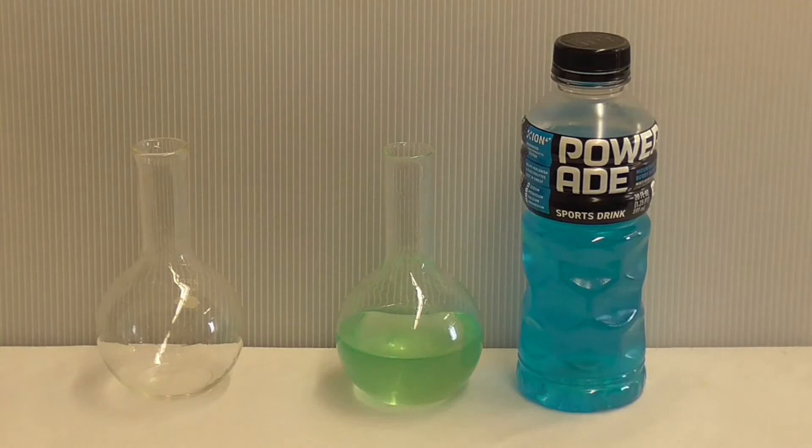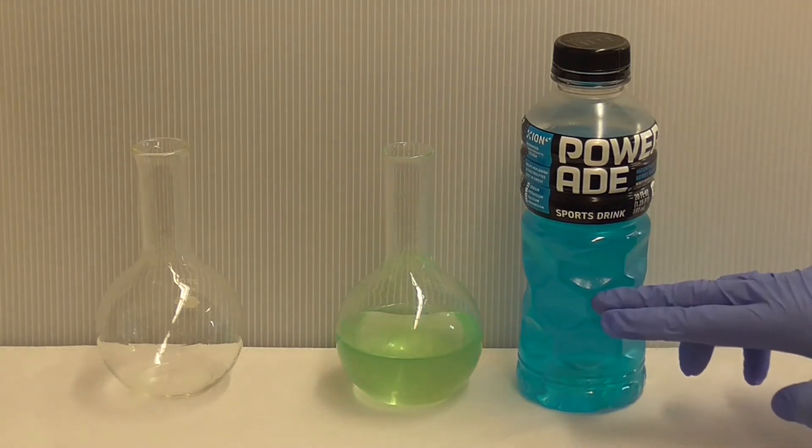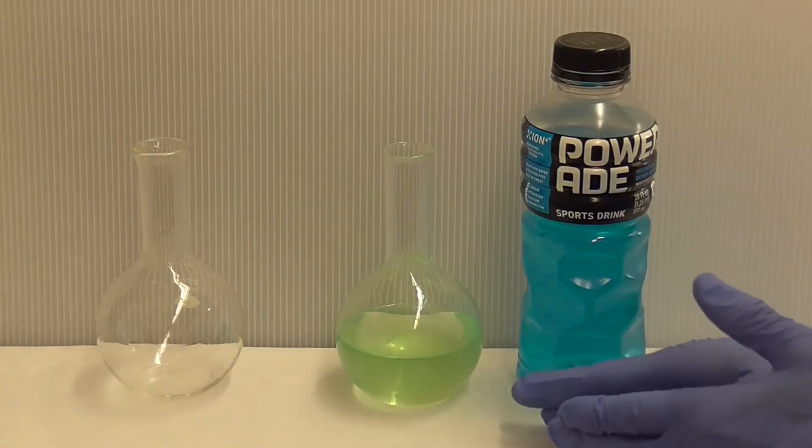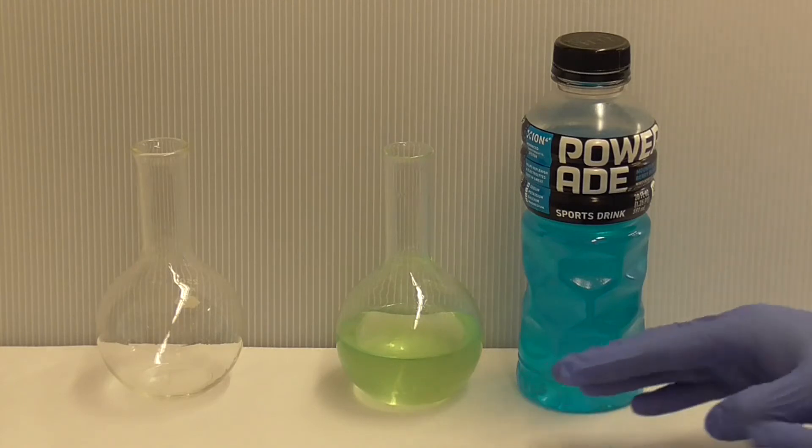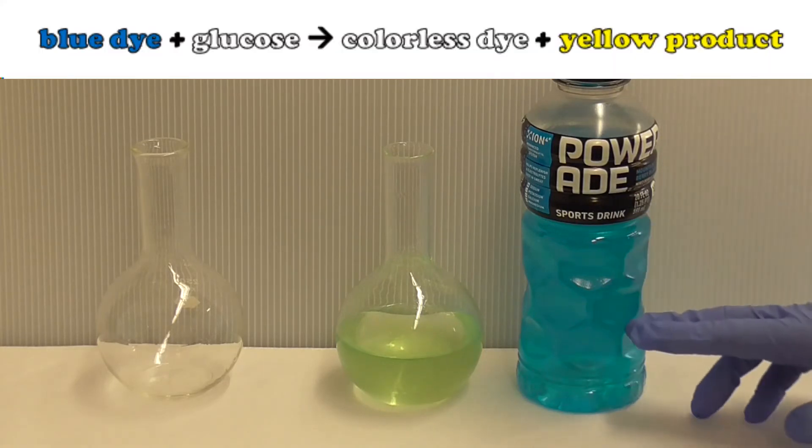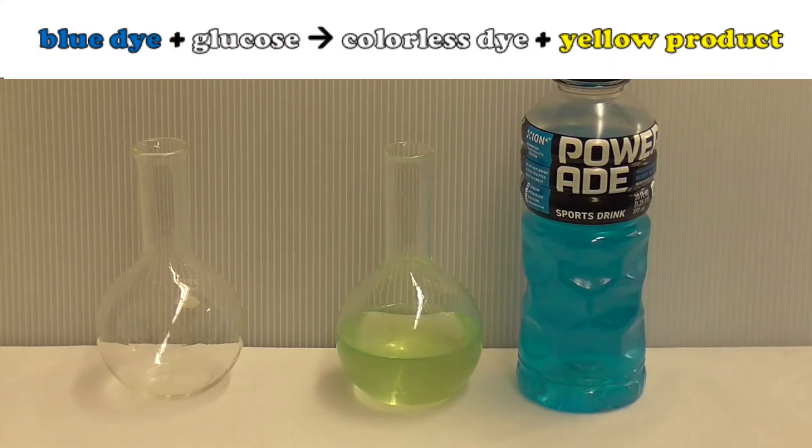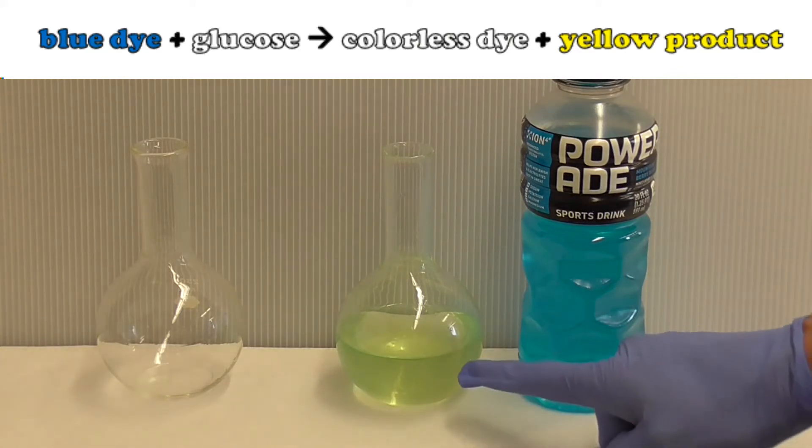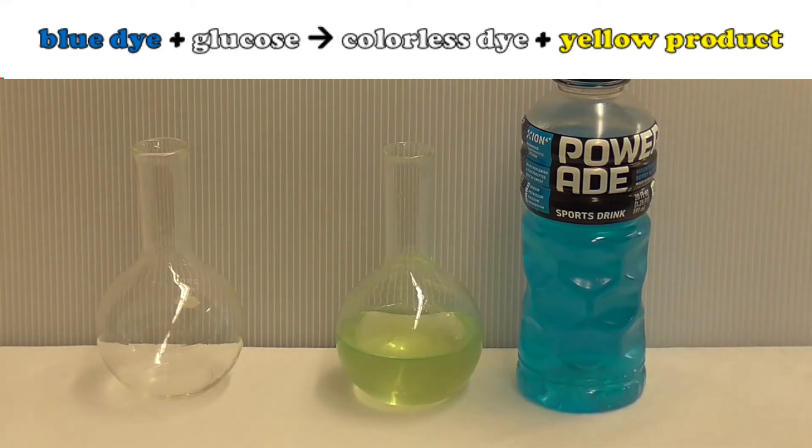Now the reason for this color change is because there is blue dye in the PowerAid in the presence of the sodium hydroxide base that reacts with the glucose in the PowerAid. The glucose reduces the blue form of the dye to a colorless form of the dye. You get a little bit of yellow color because the glucose gets converted into a yellow product.